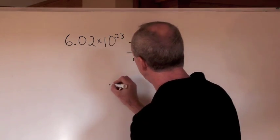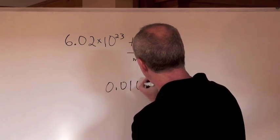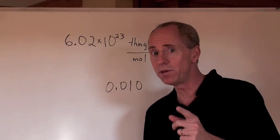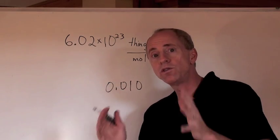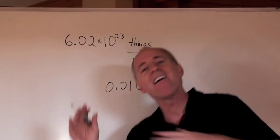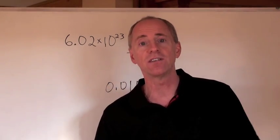First of all, in counting significant digits, this number right here has how many significant digits? The zeros in front don't count. When you start with the first natural number, everything after that is called a significant digit.